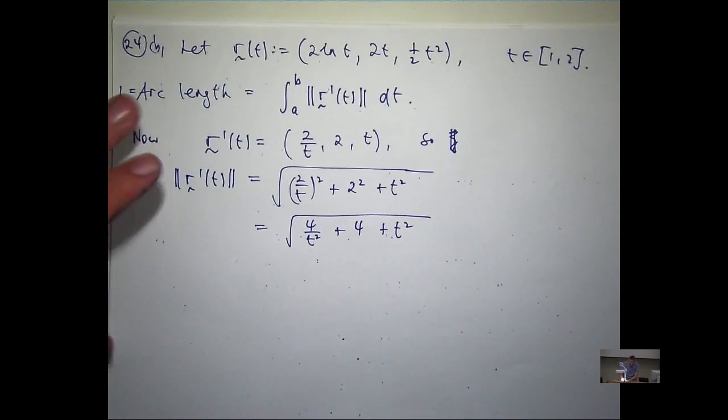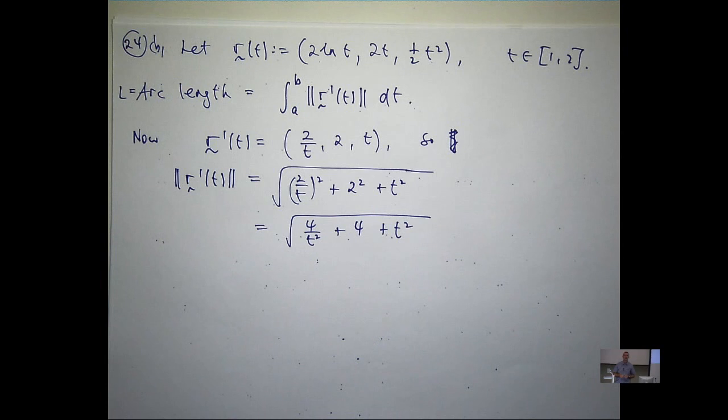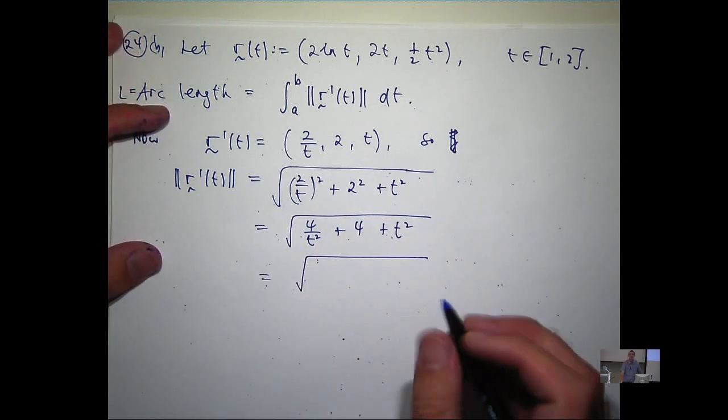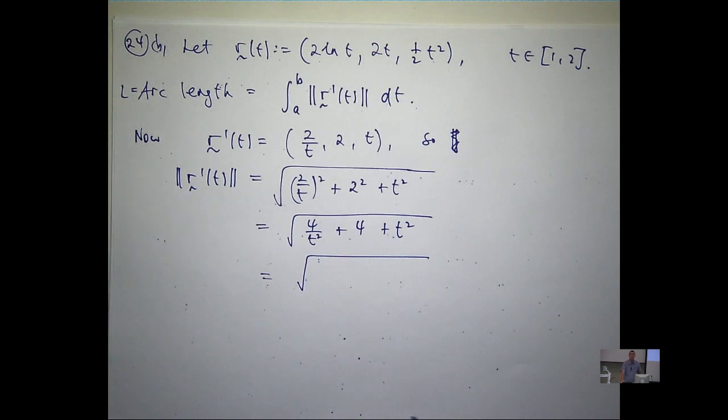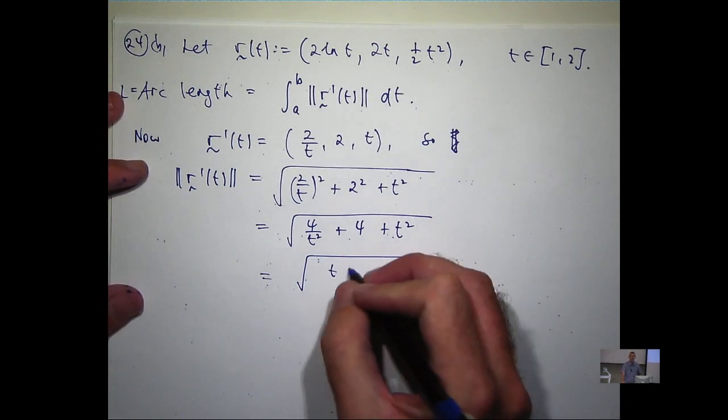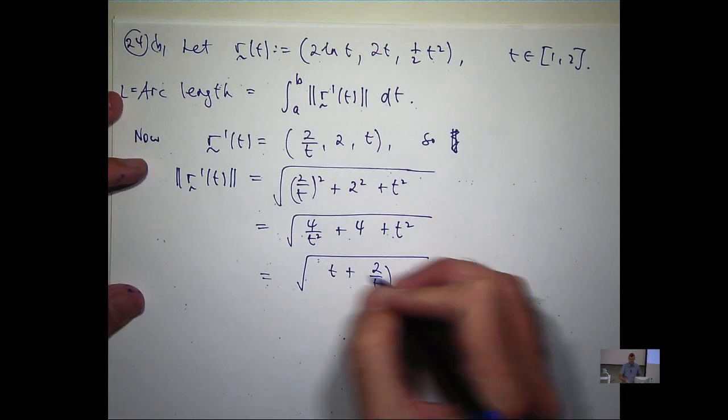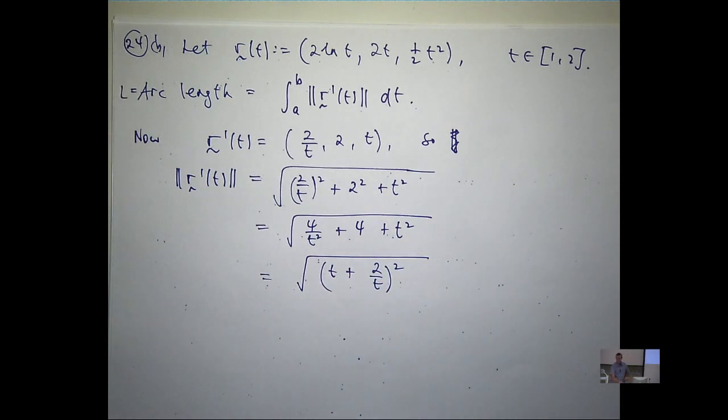So one good idea here is to try to turn this into the square of something. Okay? Now, I've got to admit, we wouldn't give you questions that were just horrible, horrible to integrate. So you should be looking for the square of something inside that square root sign. So if I write it like this, hopefully the penny will drop. Now, convince yourself that that's okay, that the algebra is okay for that.